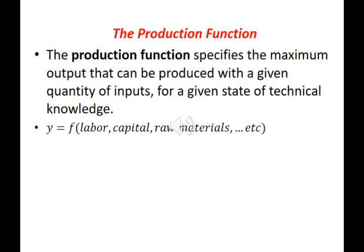A production function is a function that specifies the maximum output that can be produced with a given quantity of inputs for a given state of technical knowledge or technical know-how. So if we look at this equation: y, the level of output, equals a function of the following inputs to the production process — labor, capital, land, raw materials and so on — given a certain state of technical knowledge.